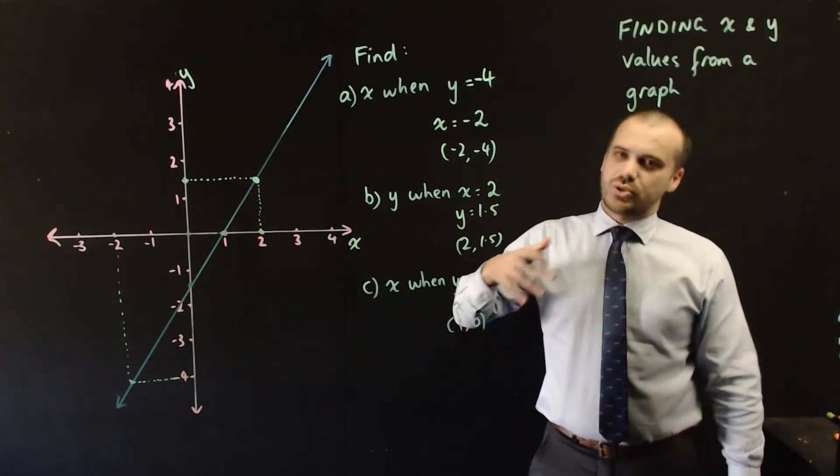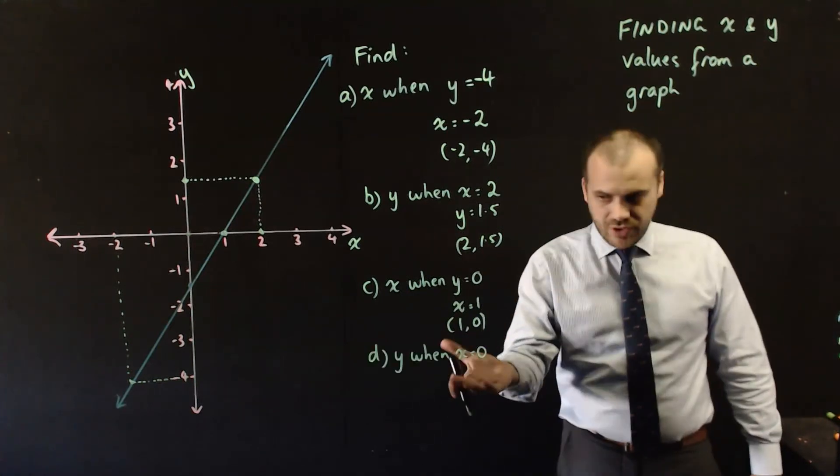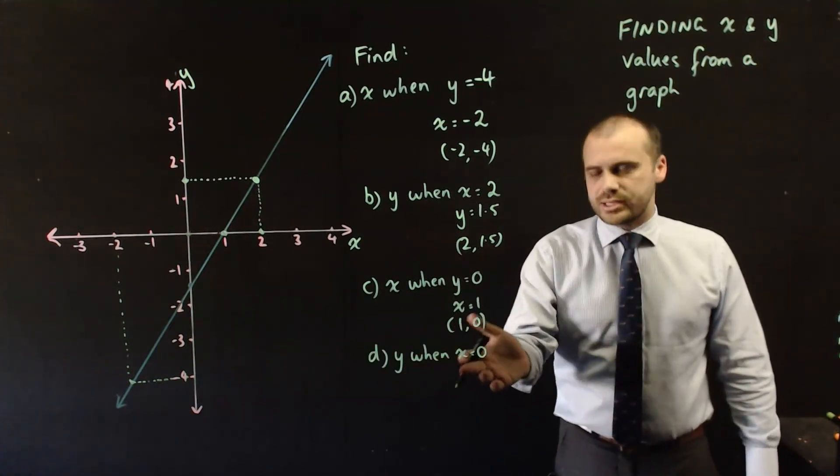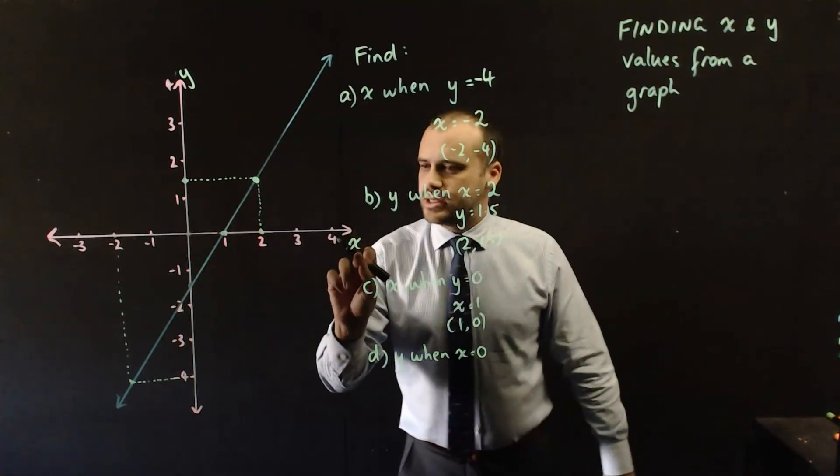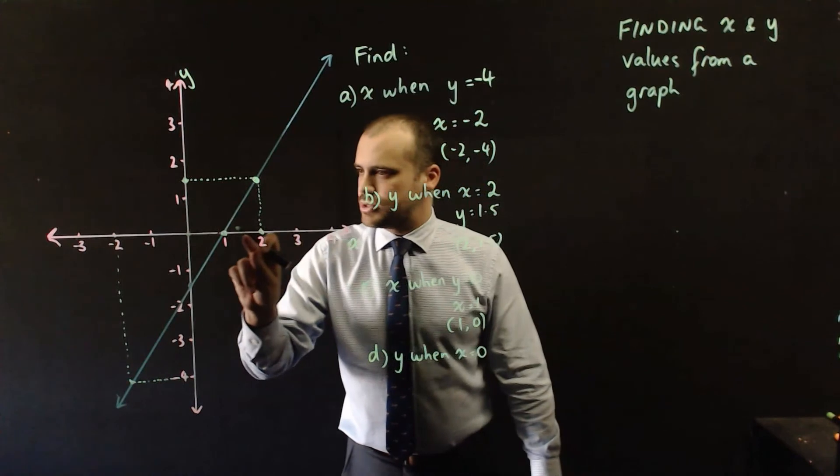And, of course, we can sort of do the opposite of that. What is the value of y when x equals 0? Alright. So, x equals 0. We know that. Here's our x axis. Where does x equal 0? Right there.